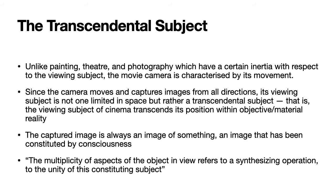Thus, the viewing subject constituted by the movie camera is actually a transcendental subject — it transcends and goes beyond the possibilities of the actual person who is watching it. The viewing subject of cinema transcends its position within objective or material reality. The next step is to say that the captured image is always an image of something, an image that has been constituted by consciousness. As we said earlier, even before you start capturing an image with the camera, you plan it, you plan the sequence of shots. So anything that is captured by the camera has an intentionality behind it.